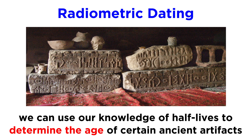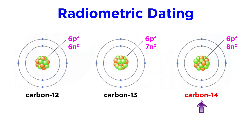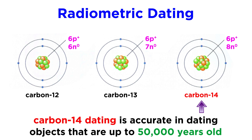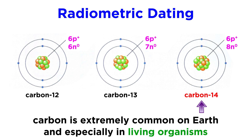Radiometric dating is a technique we have developed that takes our knowledge of the half-lives of various nuclei and uses that information to determine the age of a particular object, including things like fossils and ancient artifacts. A very common kind of radiometric dating utilizes carbon-14, a radioactive isotope of carbon which is accurate in dating artifacts with an age of up to around fifty thousand years. This is useful because carbon is such a common element, especially in living things, and anything with carbon atoms will have a trace amount of carbon-14, so this allows us to date a wide variety of objects.